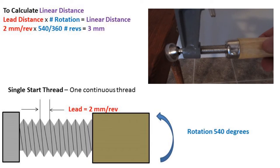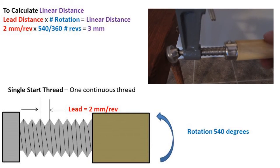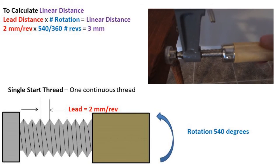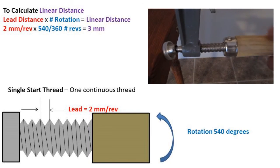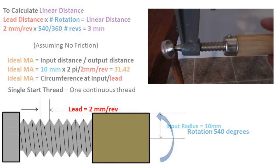The 540 degrees over 360 degrees is to calculate how many rotations we had. We then multiply how many rotations we had by the distance the thread travels over one rotation, also known as lead distance.